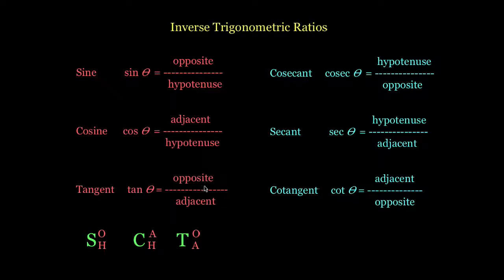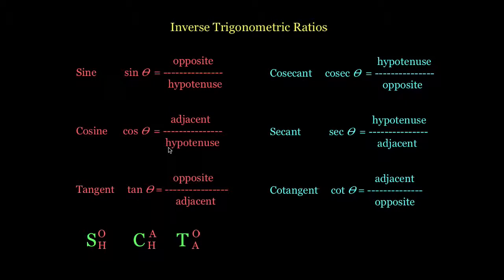So they're all just the inverse of what we originally knew as sine, cosine, and tan. The three original ratios are easy to remember using SOH-CAH-TOA. SOH stands for Sine, Opposite, Hypotenuse; CAH for Cosine, Adjacent, Hypotenuse; and TOA for Tangent, Opposite, Adjacent — the first letters of each word.